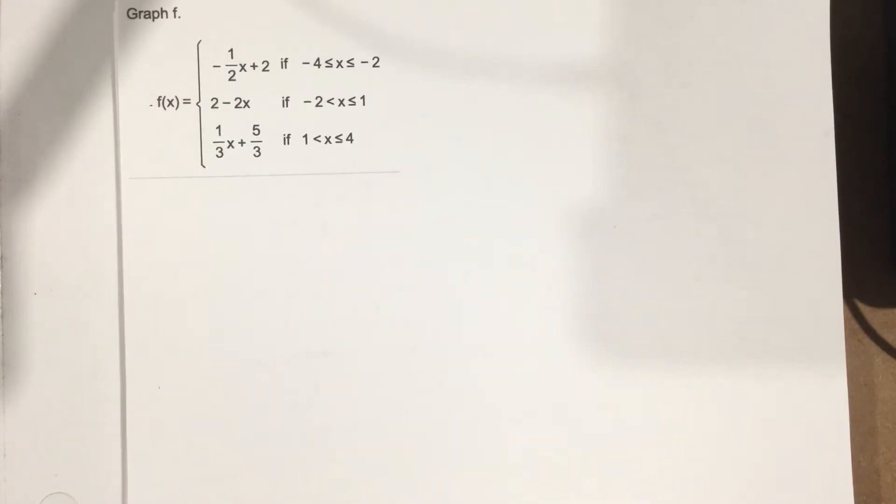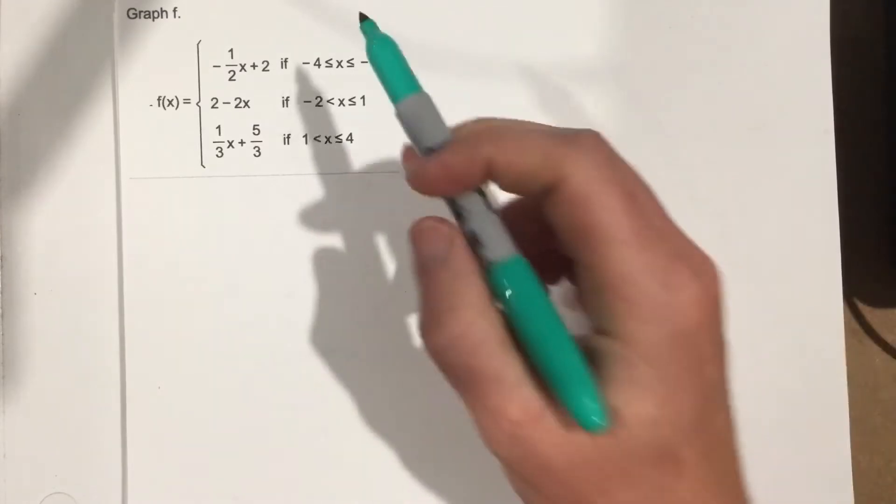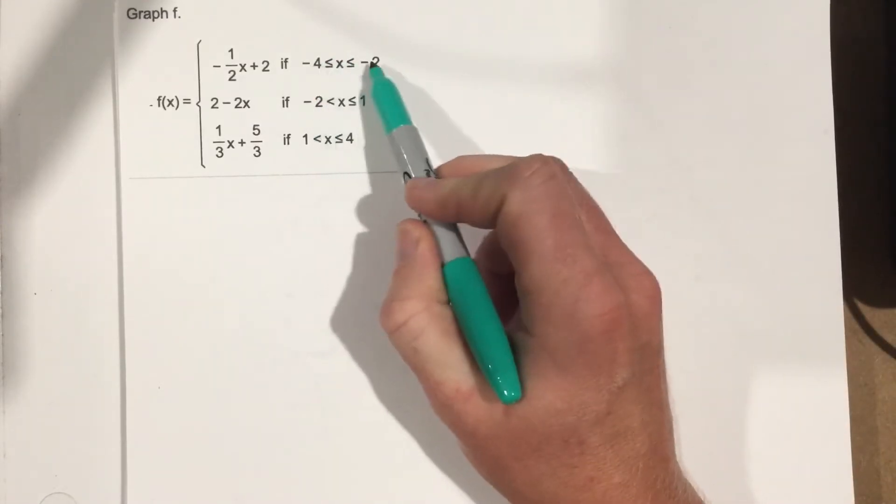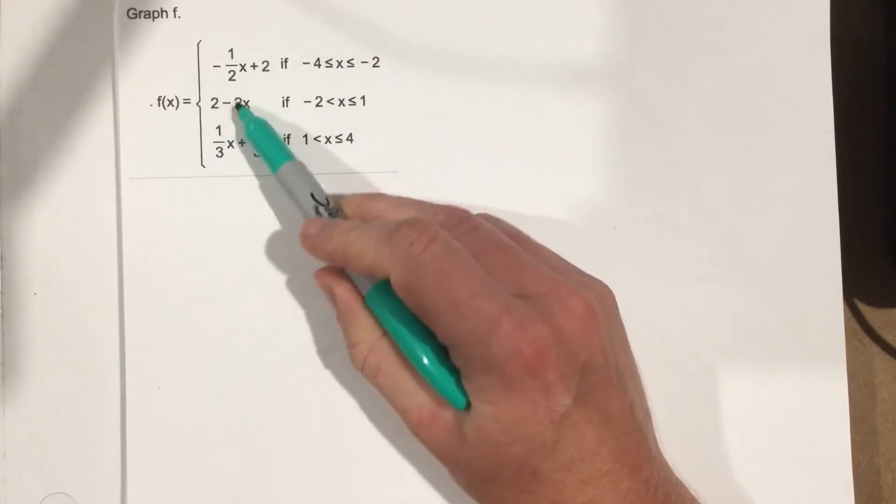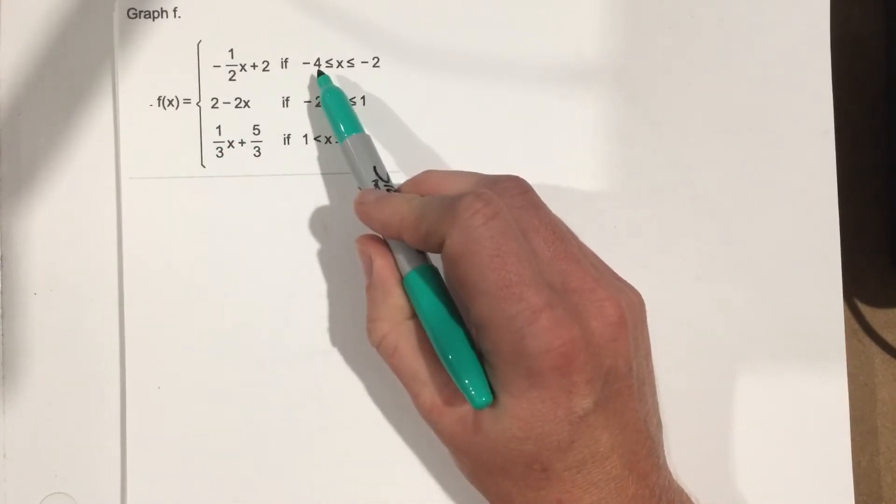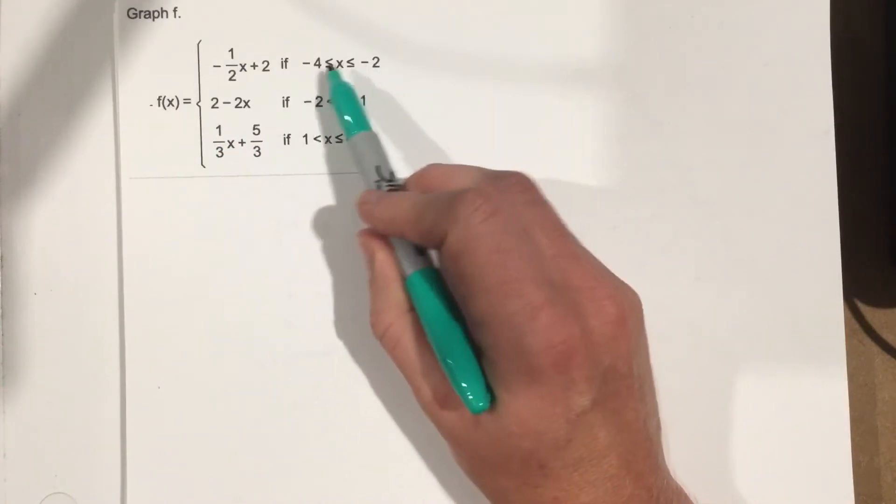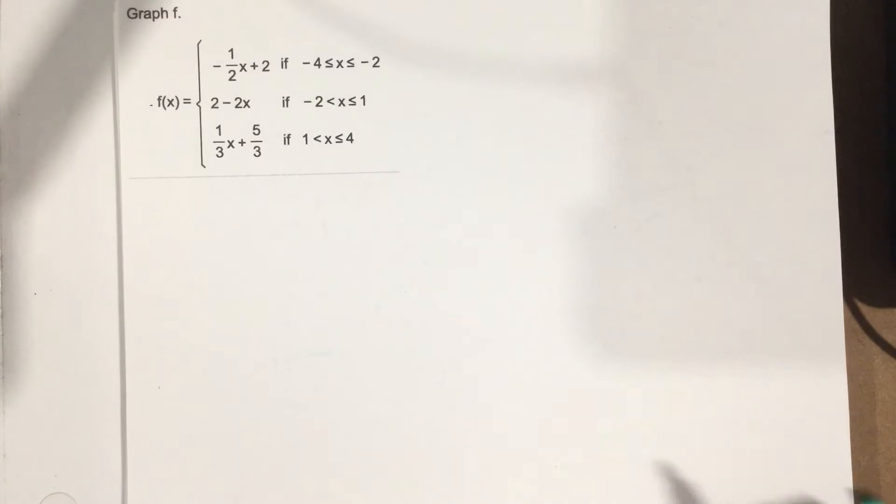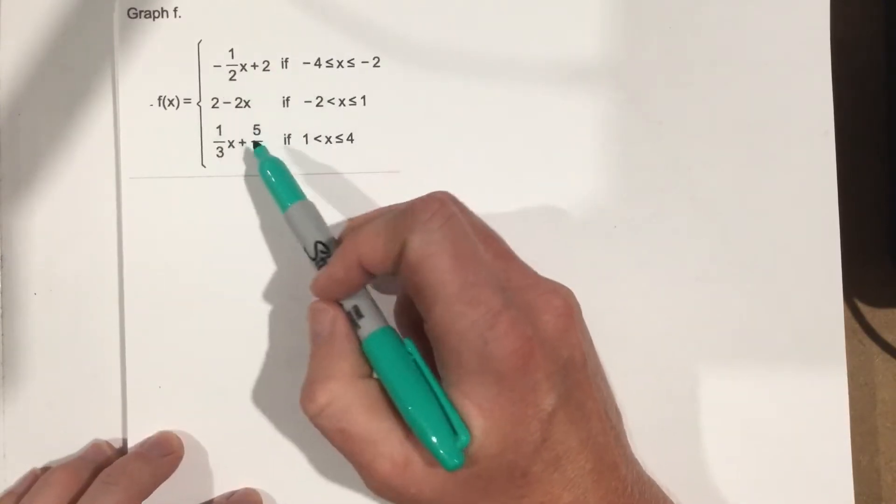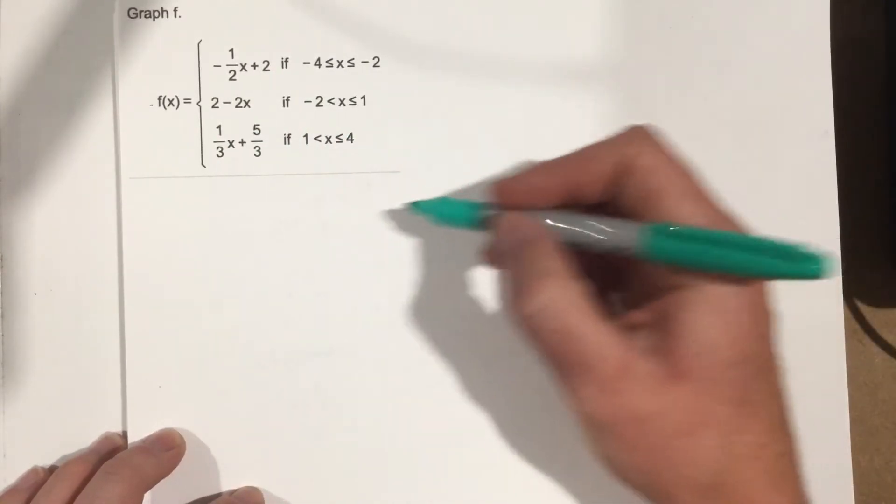So if we want to graph this, first of all, we want to look at the endpoints of each of these functions and we're going to graph them separately using just the endpoints. I think that's the easiest way to do it. We know they're each linear, so they're straight lines, so we can graph it pretty easily that way.